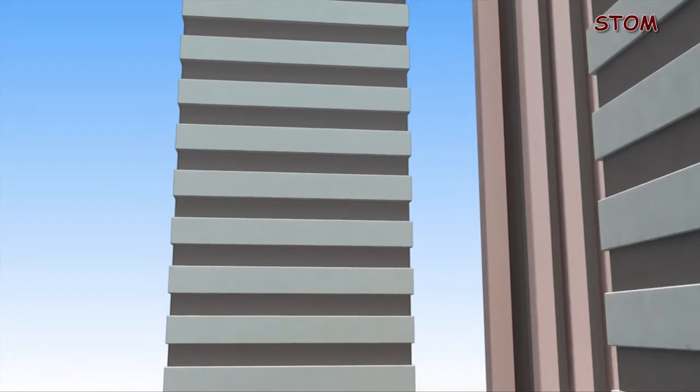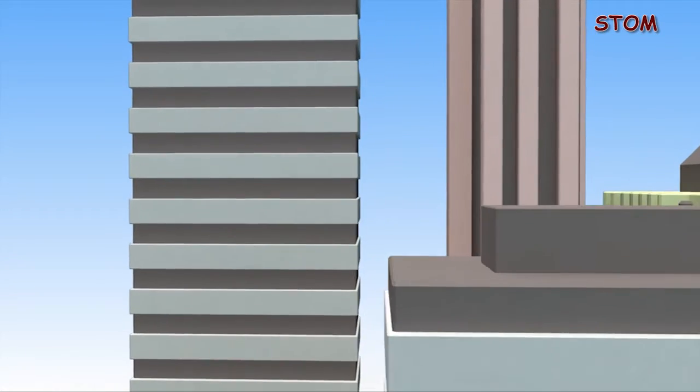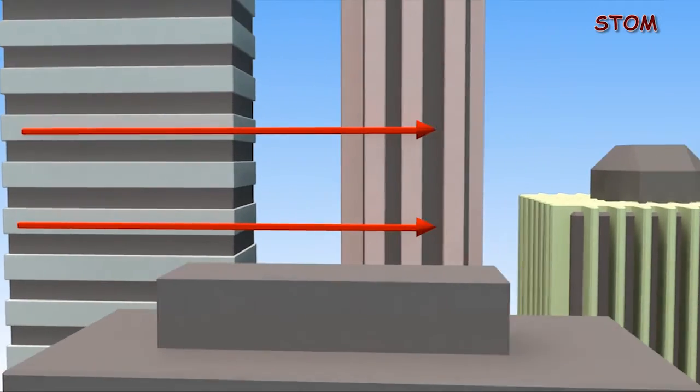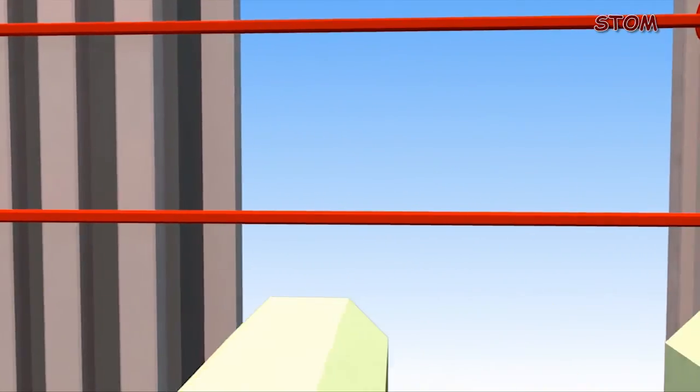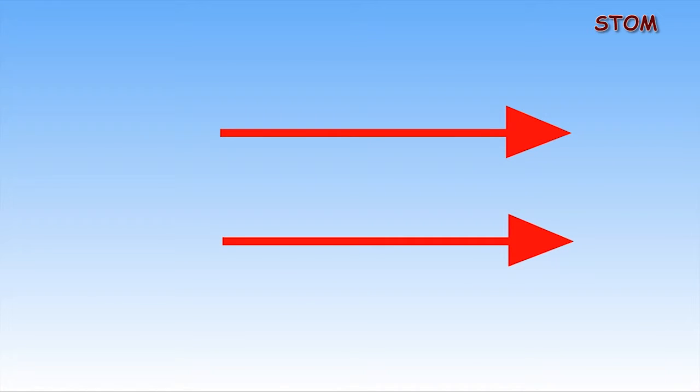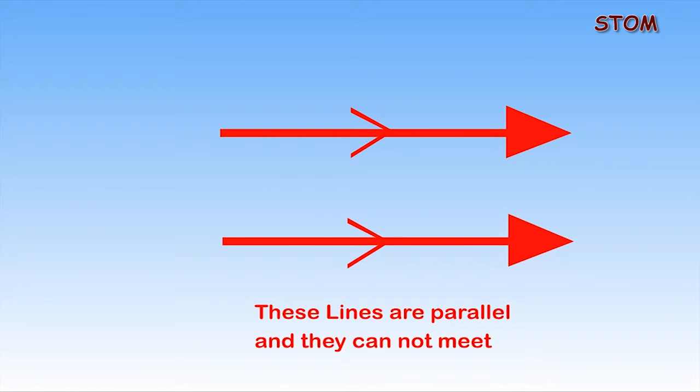In the second example, you can see that the lines on this building are parallel. In this diagram, you can see that the two lines are parallel as long as their direction does not change as indicated by the arrow.